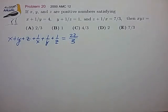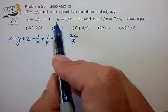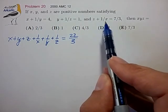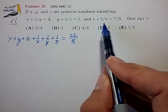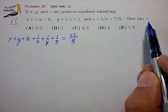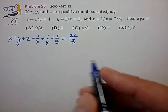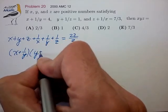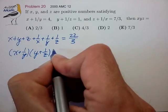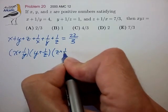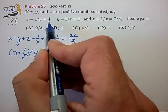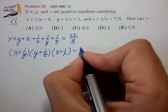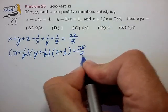Now one other obvious manipulation is to take the product of these cyclic terms, and that too should generate expressions that match the symmetry of the target expression. So let's go ahead and do that. It's equal to 4 times 1 times 7 thirds, 28 thirds.